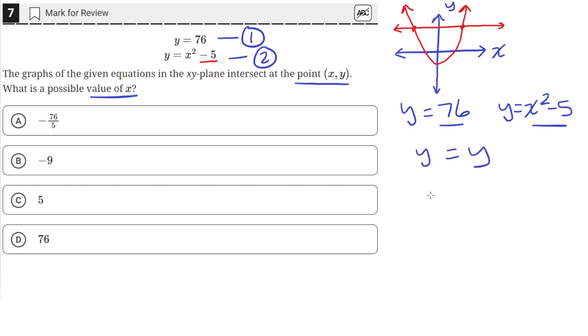So when y equals y, 76 equals x squared minus 5. So I just substituted the value of 76 for y, and x squared minus 5 for y. So then we can just solve for the value of x by isolating it. So let's move this negative 5 to the other side by adding 5 to both sides, which will give us 81 equals x squared.